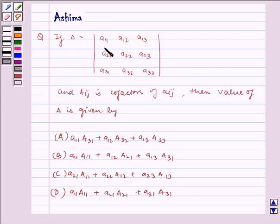If delta is equal to the determinant with elements a11, a12, a13, a21, a22, a23, a31, a32, a33, and Aij is cofactor of aij, then value of delta is given by: